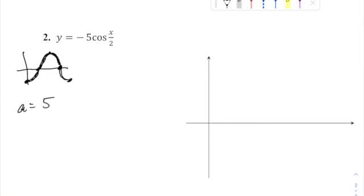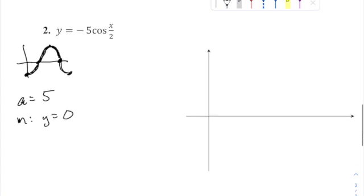Amplitude is going to be 5. That's the absolute value of negative 5. That's going to be the height of the waves. The midline is y equals zero. There's been no constant added or subtracted to the end. So it's going to stay centered right around the x-axis, y equals zero.